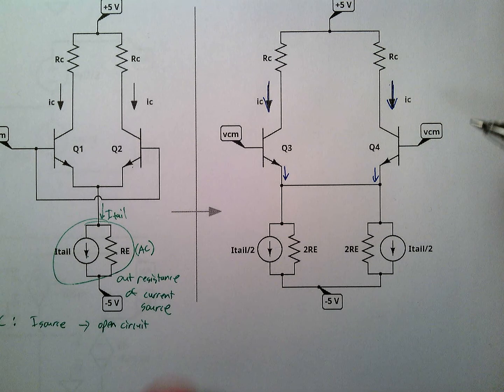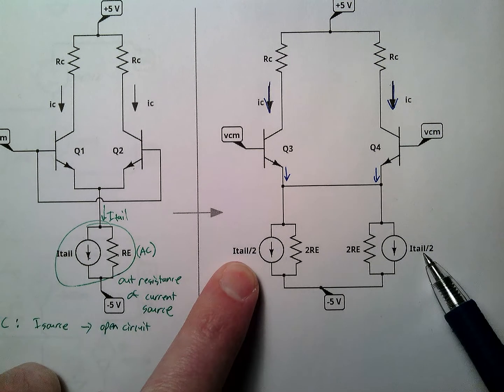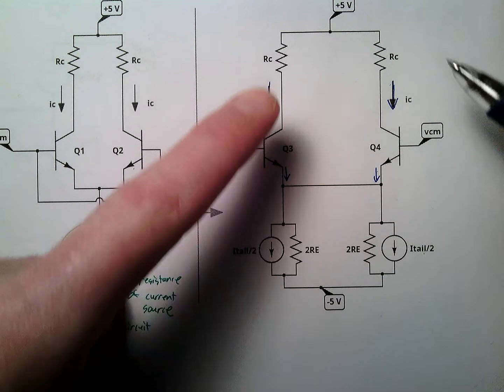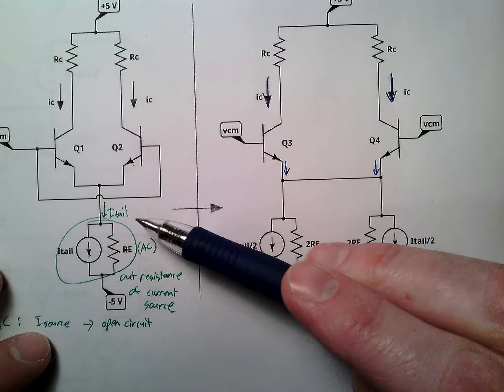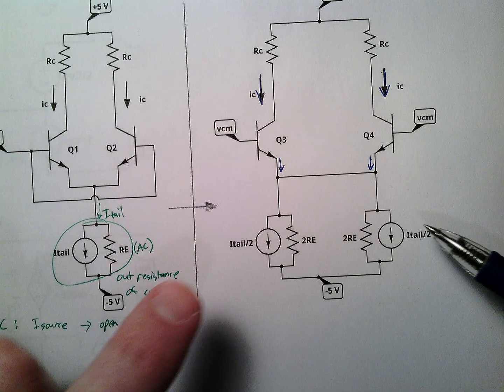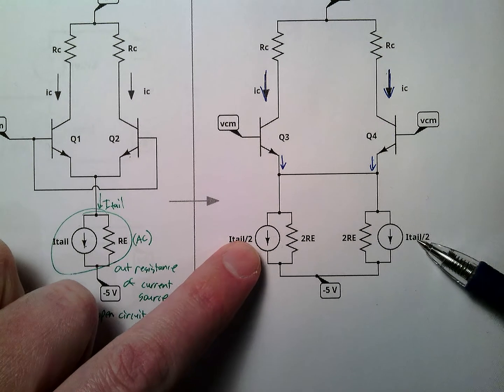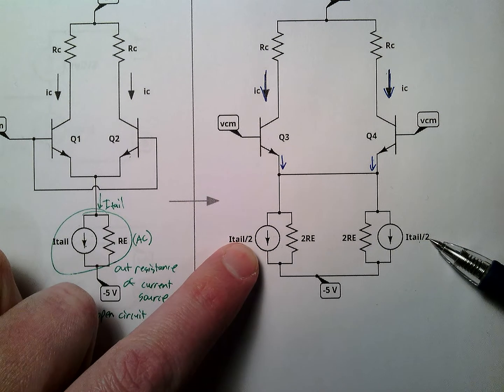Well, because of KCL, we have itale over 2, itale over 2. KCL says the current's coming in, need to total itale, because they originally did. So we can split this into two current sources with half of the current each.